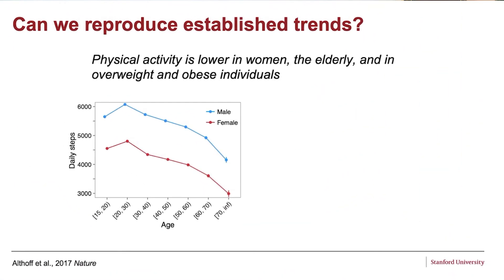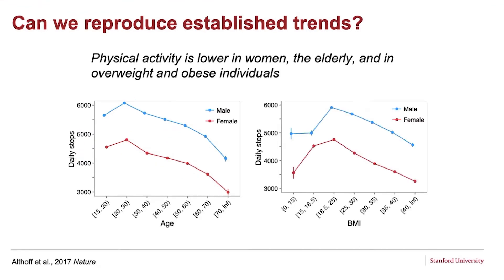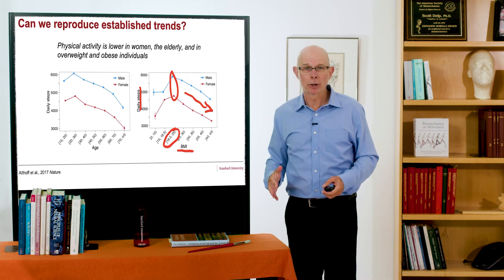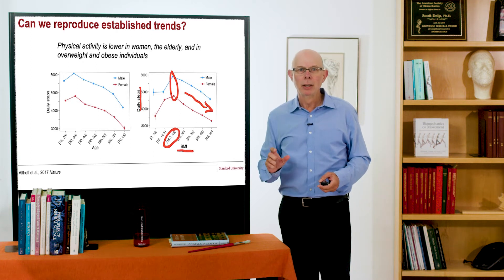What you see is the average daily steps for different ages. It declines with age, with a peak between 20 and 40. You also see that males on average take more steps than females. What I'm plotting here is the average daily steps in the US versus body mass index. Healthy body mass index is between 18 and 25, and you see that's where the peak average daily steps occur. It declines with increasing body mass index. We could reproduce these established trends, and this gave us confidence that there was a signal despite some noise.